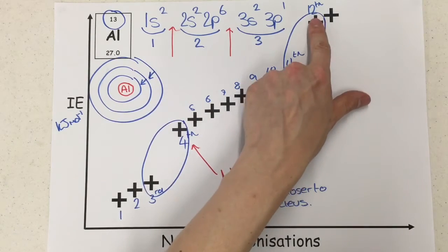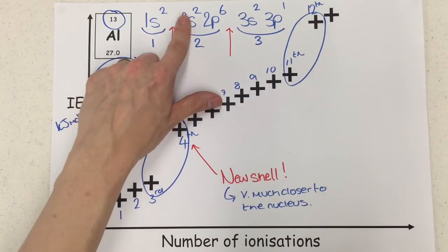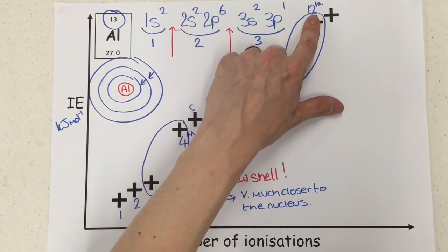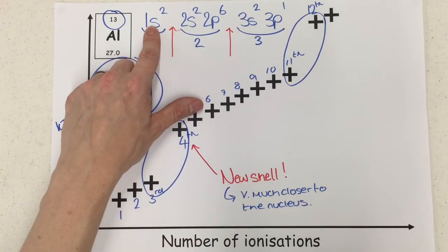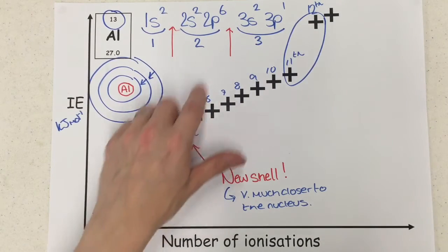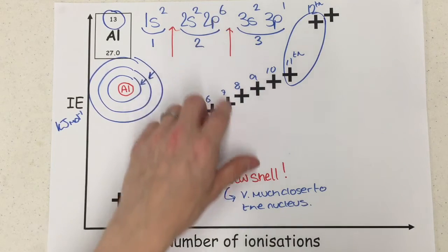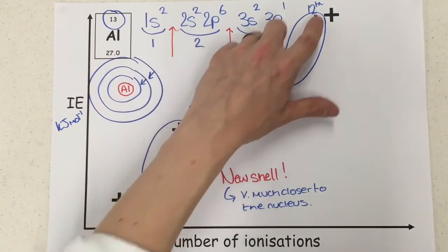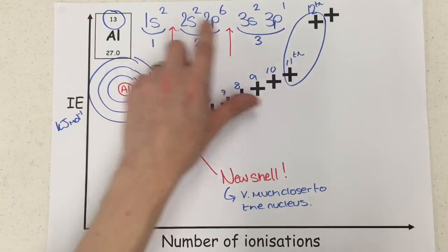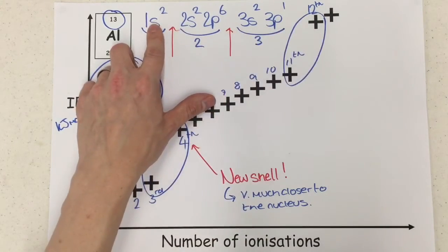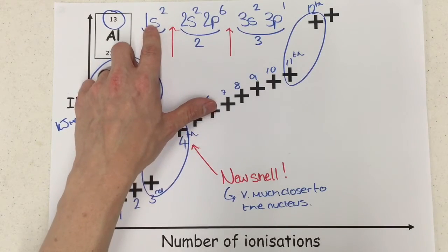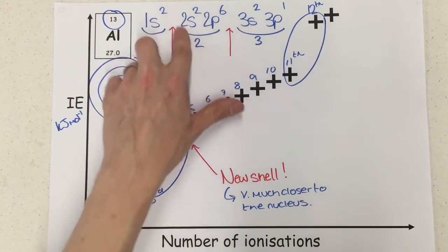Now similarly then, between the 11th and 12th, that would be moving from shell 2 to shell 1. So the 12th electron here is the first one of shell 1, just like the fourth electron here was the first one we try and take away from shell 2. Remember we're going backwards through this. So here this gap is because we're now trying to remove this 12th electron from the first shell, which is closer to the nucleus than any of these were just here.